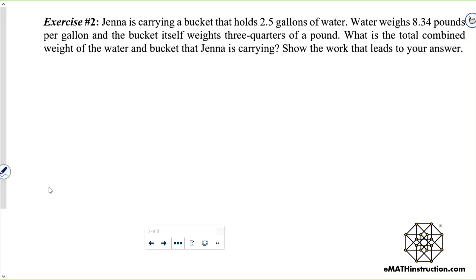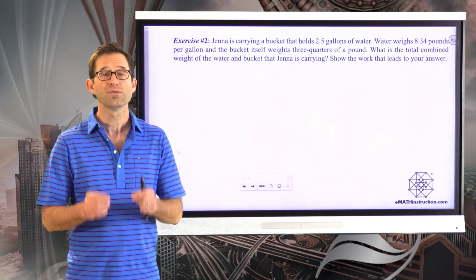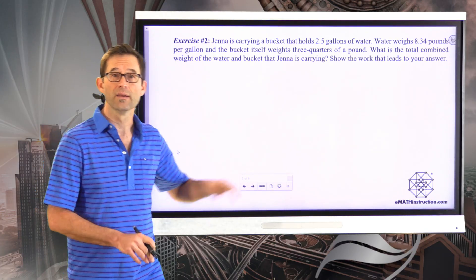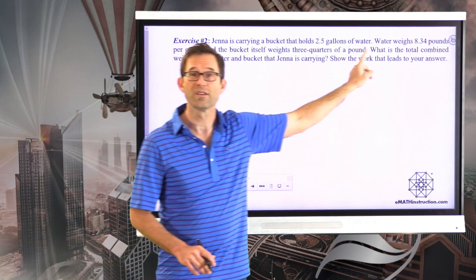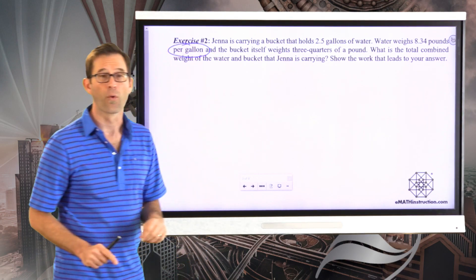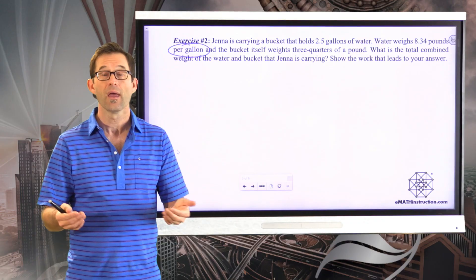Exercise number two. Jenna is carrying a bucket that holds 2.5 gallons of water. Water weighs 8.34 pounds per gallon, and the bucket itself weighs three-quarters of a pound. What is the total combined weight of the water and bucket that Jenna is carrying? She's carrying two and a half gallons of water, and water weighs 8.34 pounds per gallon — there's that rate again. So we need to calculate the weight of water using a product.